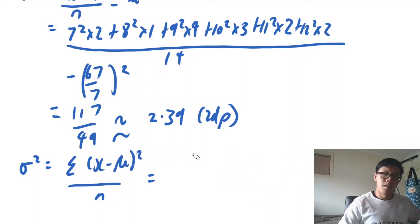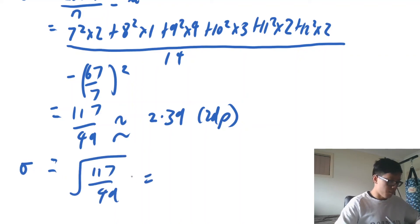Now in order to find the standard deviation very simple we just take the square root of our variance. I'm going to use the fraction because this makes it a bit more accurate.